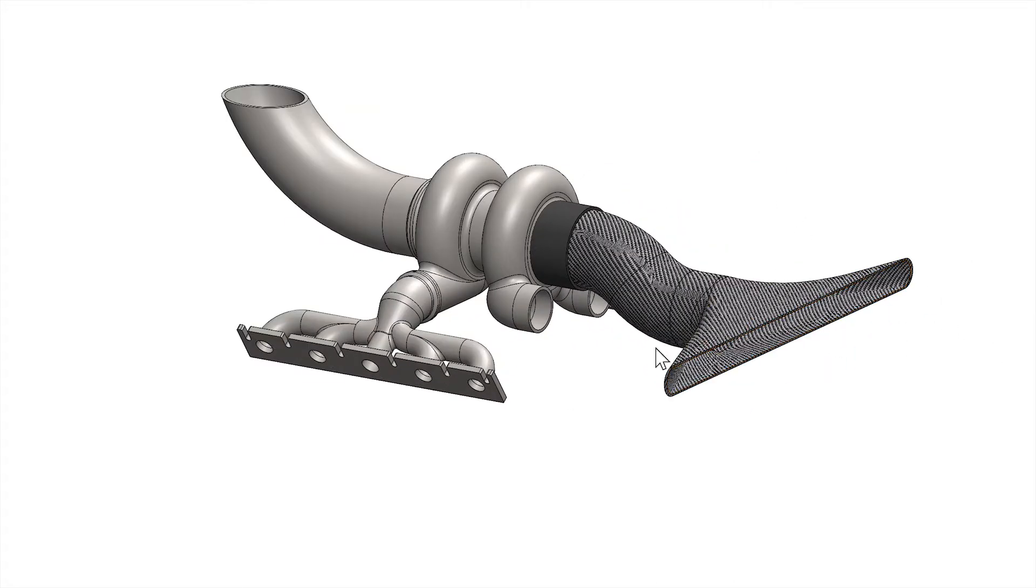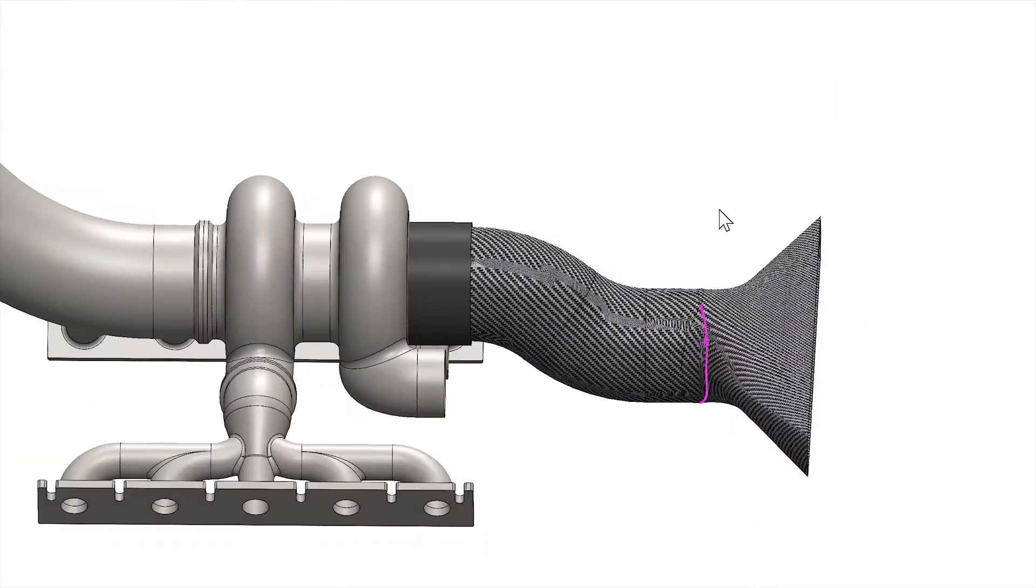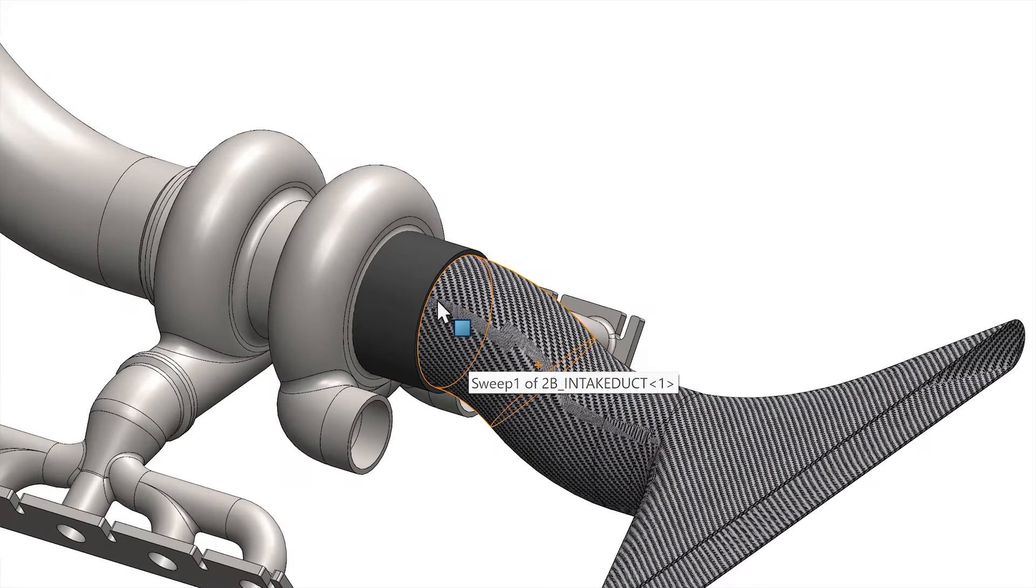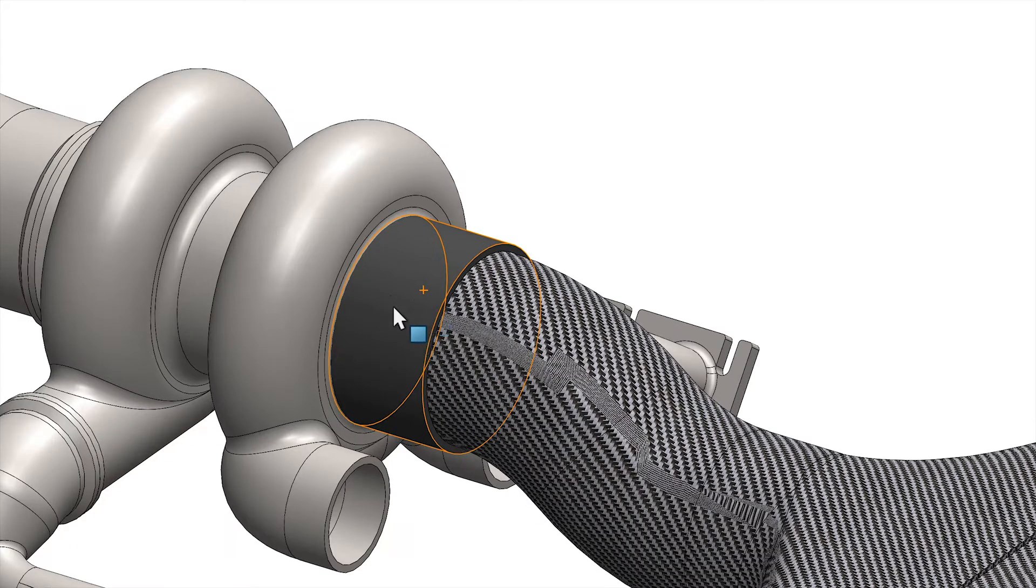The air would go through this front duct right here, and then this duct will converge to a circular pipe which I believe is four inch. Then that would go into the turbo compressor side and it's connected with a silicone coupler. You can't really use V-band, so that's why you just use the silicone coupler.